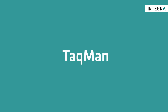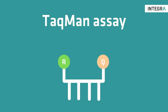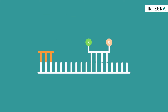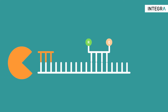Instead of using intercalating dyes, the TaqMan assay uses TaqMan probes with a 5' fluorescent reporter dye and a 3' quencher dye. These probes are target-specific, and only bind to the DNA sequence of interest downstream of one of the primers during the annealing step.